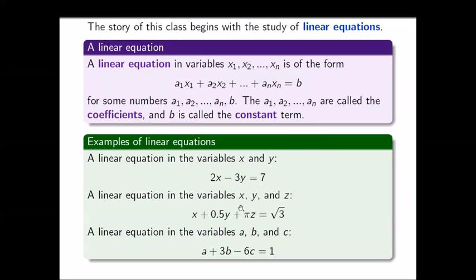The variables in the second equation are x, y, and z. The coefficients are 1, 0.5, and pi, and the constant term is the square root of 3. And in the last one, the variables are a, b, and c. The coefficients are 1, 3, and minus 6, and the constant term is 1.